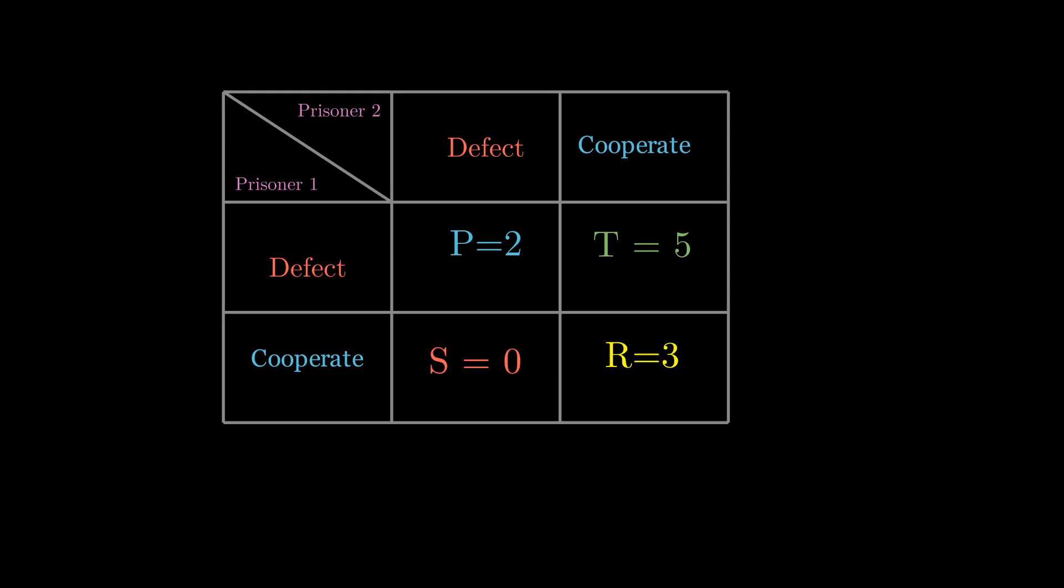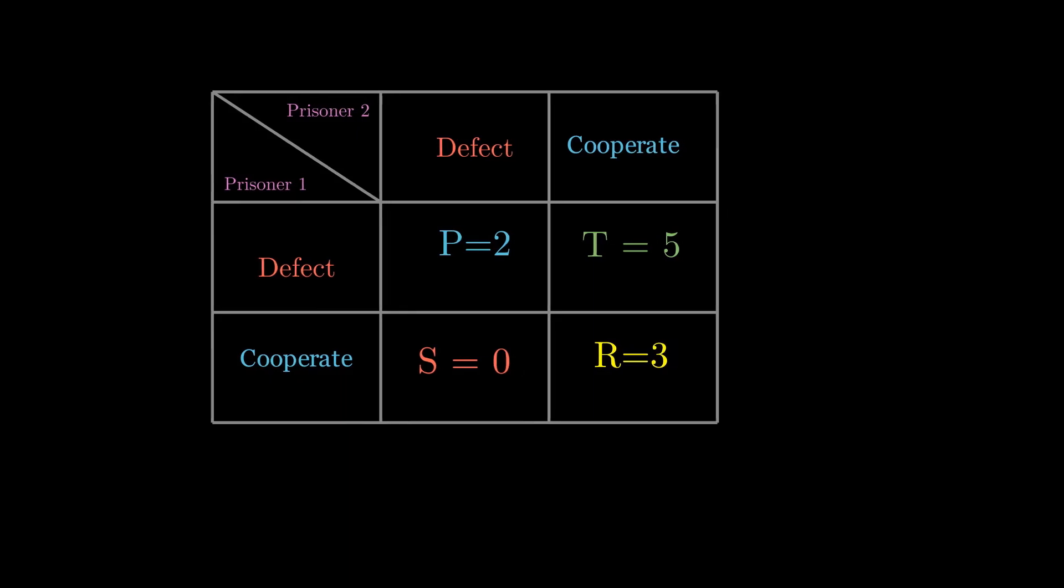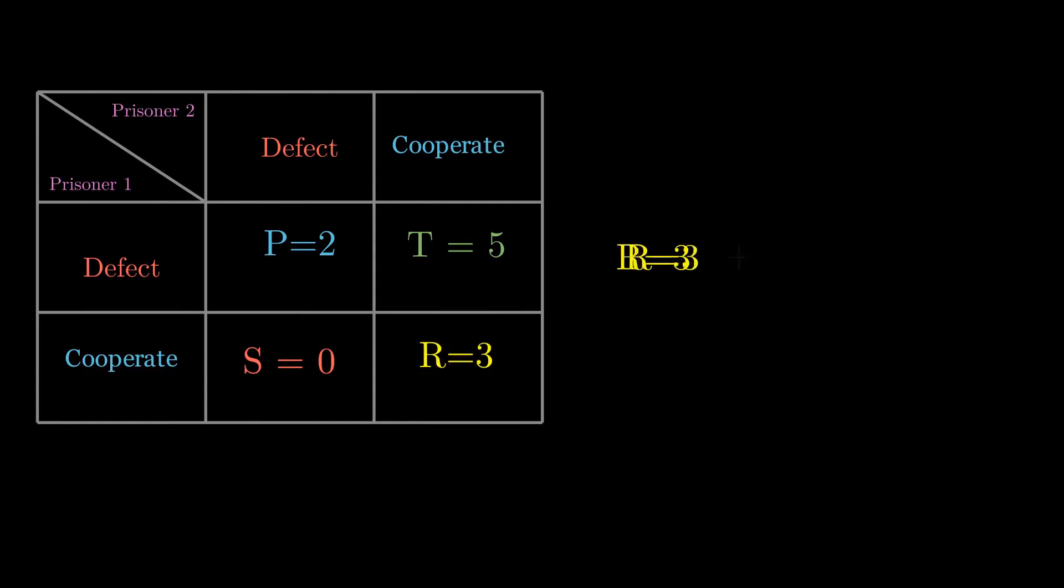Initially, it feels like cooperating is the best option because when both of them cooperate, each gets three points reward of cooperation. They accumulate six points in total, serve very few years in prison and live happily ever after.